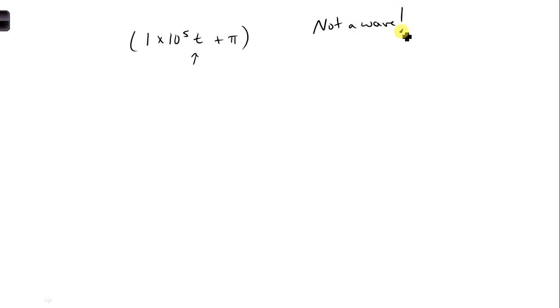But we can still convert it to a phasor domain and get a phasor. So we apply Euler's identity. First, of course, we check that it's written in terms of cosine, and it is.